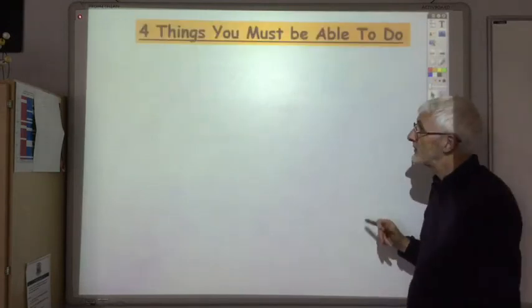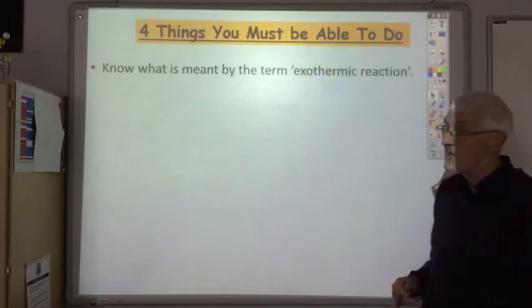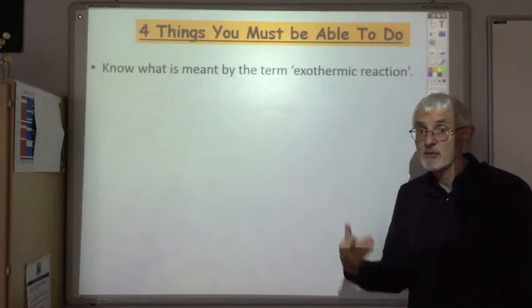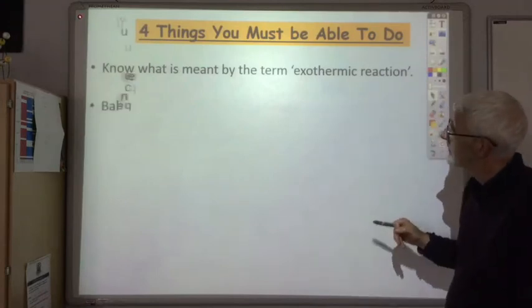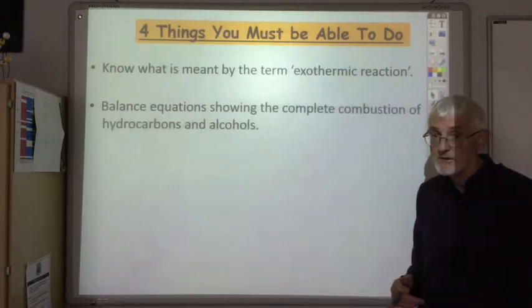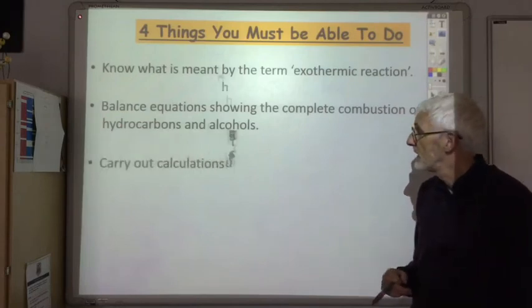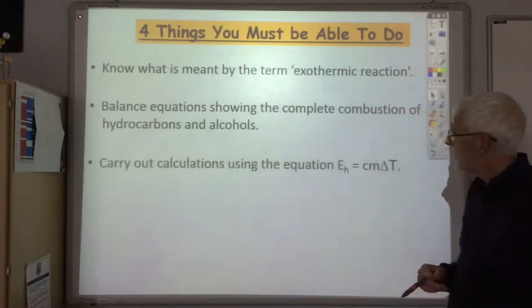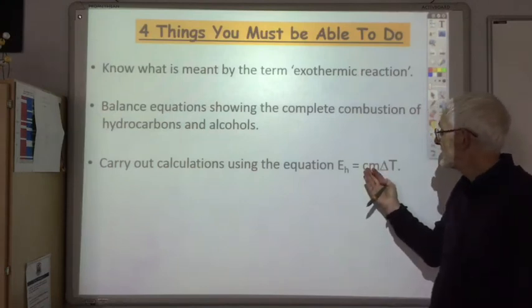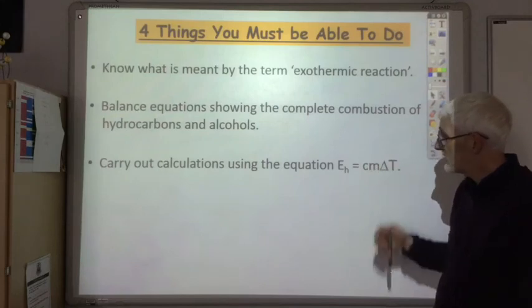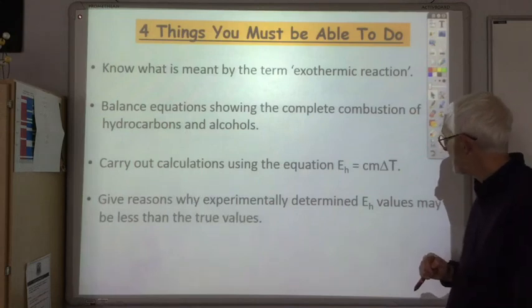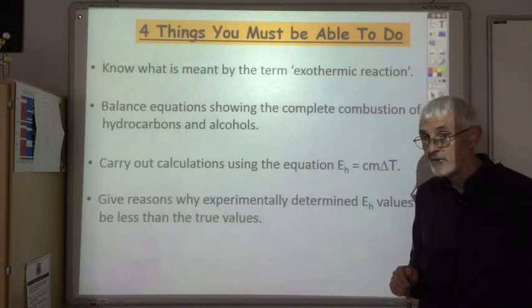Okay, fourth thing you should be able to do: know what is meant by the term exothermic reaction, and of course the opposite is an endothermic reaction. Balance equations showing the complete combustion of hydrocarbons and alcohols. Carry out calculations using the equation Eh = cmΔT and be able to rearrange it if you're asked to calculate C, M, or ΔT. And you should be able to give reasons why experimentally determined Eh values may be less than the theoretical values.